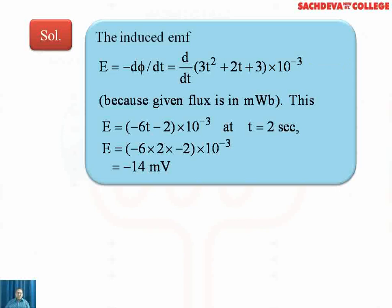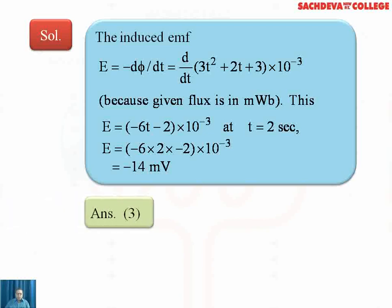Taking the derivative of 3T² + 2T + 3 gives 6T + 2 (derivative of the constant 3 is 0), multiplied by 10⁻³. So E = −(6T + 2)×10⁻³. The negative sign comes from the basic equation. Computing at T = 2 seconds gives −14 millivolts, and the third answer is the correct option.